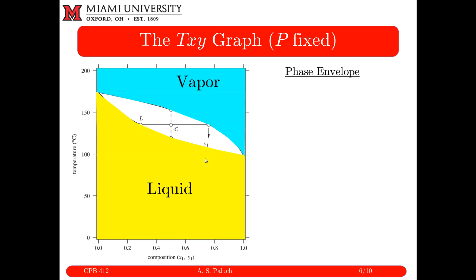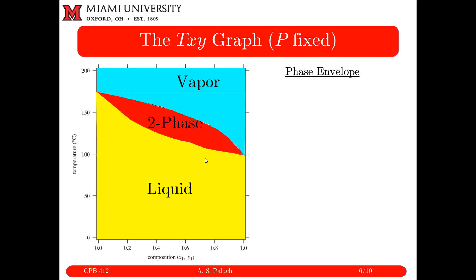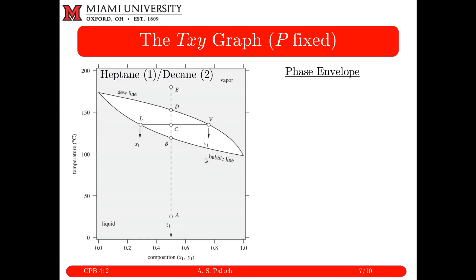So below my bubble line I have a liquid, above my dew line I have a vapor, and in between I have a two-phase mixture. Notation: X1 will typically correspond to a liquid (typically a saturated liquid), Y will be used for a vapor (typically a saturated vapor). When dealing with processes involving vapor-liquid coexistence, I use Z to designate a feed stream that could be either a liquid or a vapor not at two-phase coexistence.